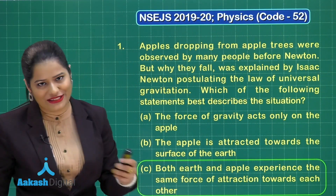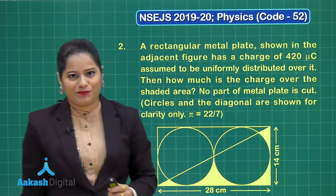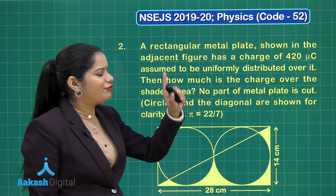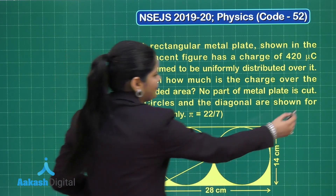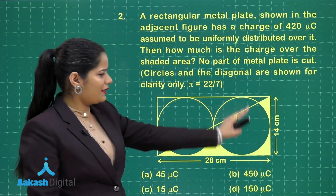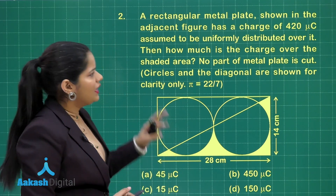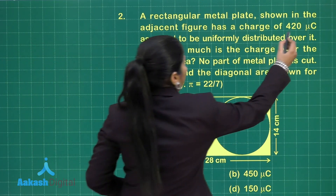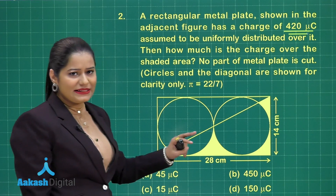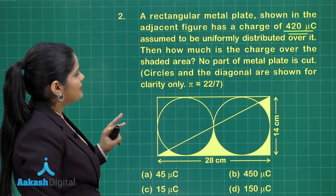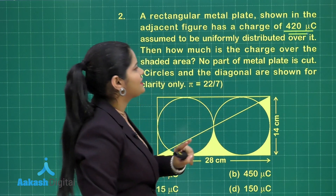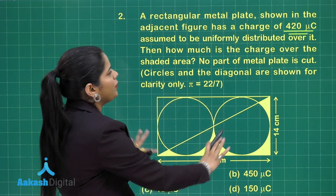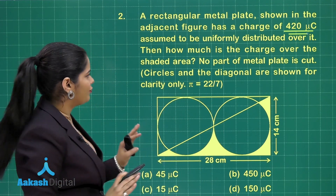Moving on to question number 2. This question says a rectangular metal plate shown in the adjacent figure has a charge of 420 microcoulombs. We are given this plate and 420 microcoulombs is the charge given to it. The question further says it is assumed to be uniformly distributed over the plate — so we need to assume this charge is uniformly distributed all over the area of the plate.